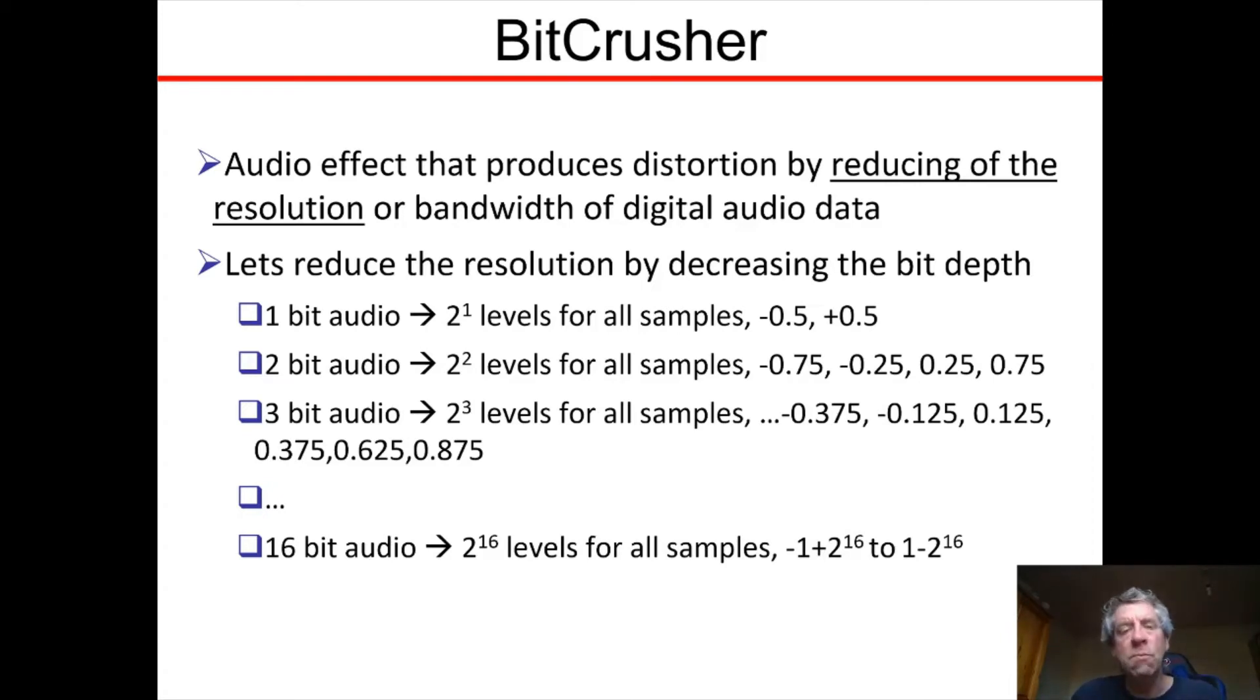If it's 2-bit audio, then 2 squared or 4 levels: -0.75, -0.25, 0.25, 0.75, and so on for 3-bit, 4-bit, 5-bit. So essentially if we have n-bit audio, there are 2 to the n levels.